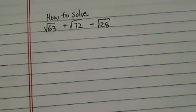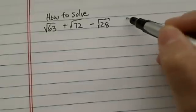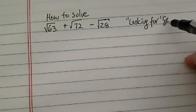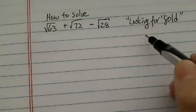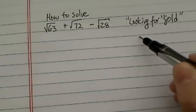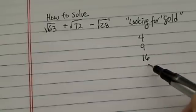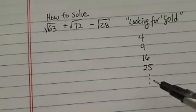The best way to work with radicals is, remember, you're looking for gold. What we refer to as gold are the perfect squares. 4 is the perfect square, 9, 16, 25, and so on and so forth.